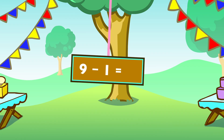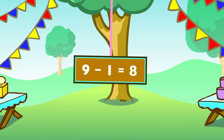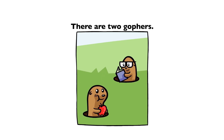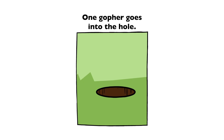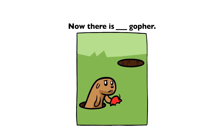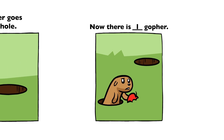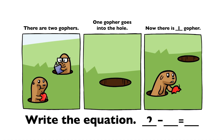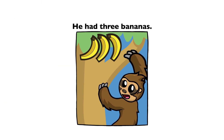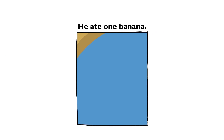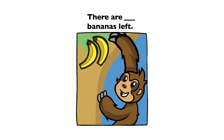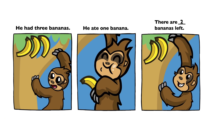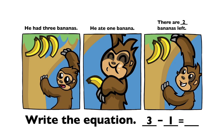Nine minus one equals eight. There are two gophers. One gopher goes into the hole. Now there is one gopher. Two minus one equals one. He had three bananas. He ate one banana. There are two bananas left. Three minus one equals two.